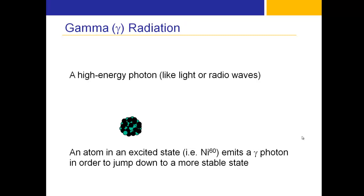Then we get to gamma radiation — this is the radiation most people are talking about in the media when reactors melt down or there's fear of a nuclear explosion. Gamma radiation is a high-energy photon, like light or radio waves. No actual radioactive decay must happen for gamma radiation to be emitted; what is required is a large influx of energy supplied to an atom.